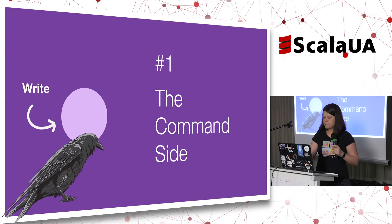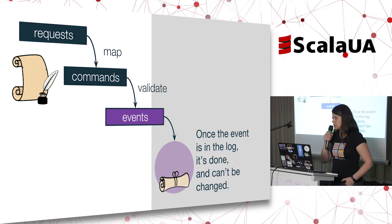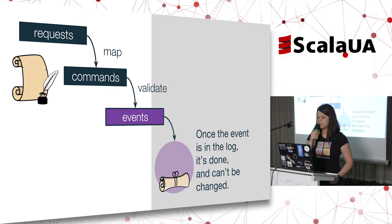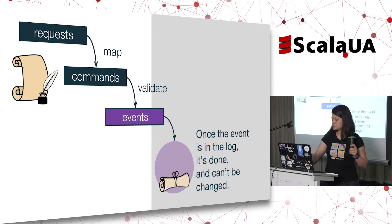Users send requests — my users are HRs, hiring managers, and interviewers. These requests are mapped to commands, and these commands have to be validated against aggregate state. This is the last chance to say no — you can't hire this candidate because they haven't applied. Because once the command becomes an event, that's it. It's done. It's in the log. You cannot change it anymore. So validation is very important here.